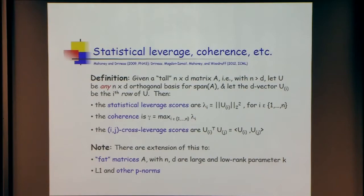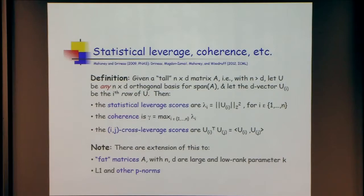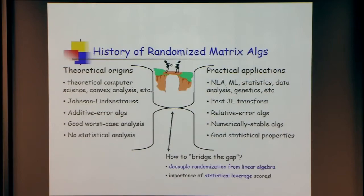The hard part for sampling algorithms is finding these non-uniformity structures. Think of this like a delta function — when you hit a Fourier transform against a delta function, you go from something very localized to very delocalized. That's what random projections do: they take localized structure in the coordinate-biased sense and delocalize it over all coordinates. The statistical leverage scores are the Euclidean norms of these rows of U — the diagonal elements of the projection matrix onto the column span of A. The coherence is the largest leverage score.